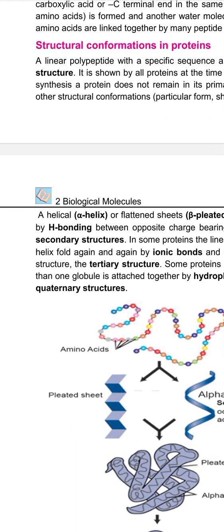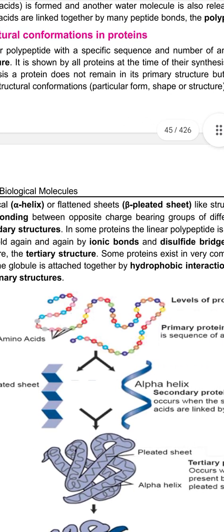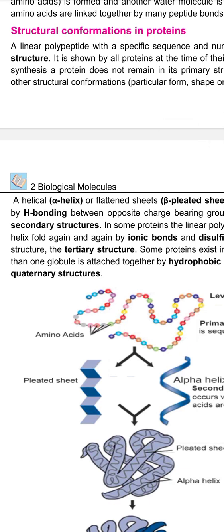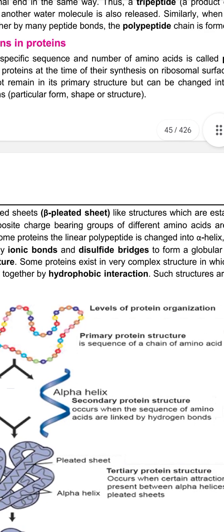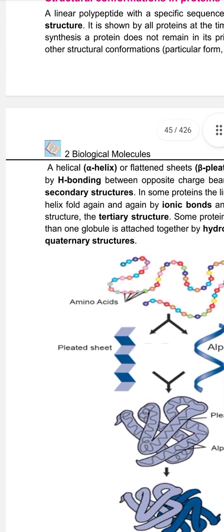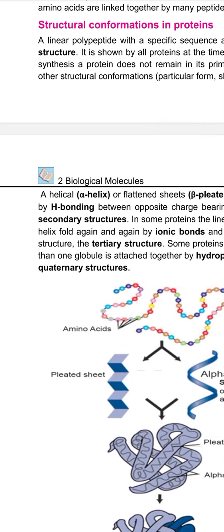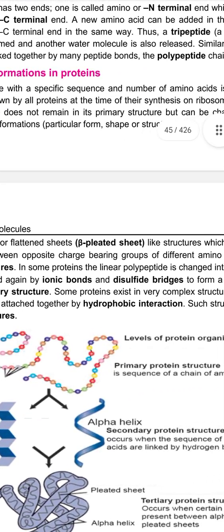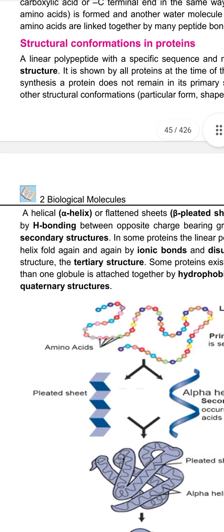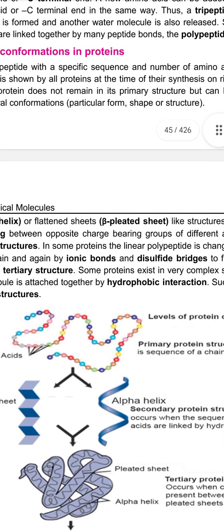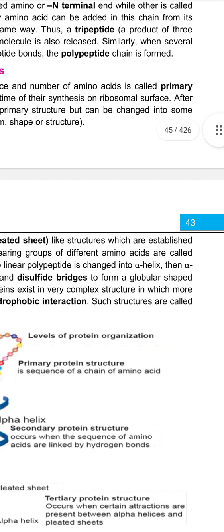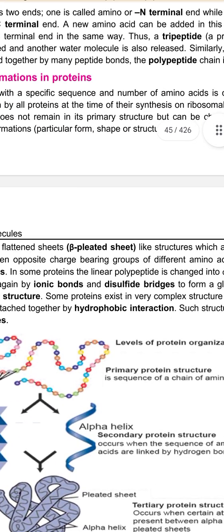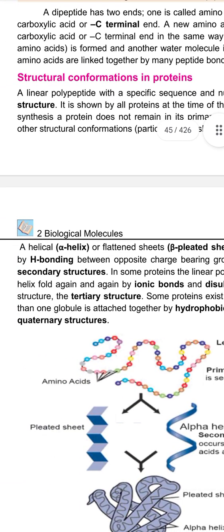Helical structures — alpha helices — or flattened sheets called beta-pleated sheet-like structures, which are established by hydrogen bonding between opposite charge-bearing groups of different parts of the polypeptide, are called secondary structures. In some proteins, the linear polypeptide changes into an alpha helix. The alpha helix then folds again and again via ionic bonds and disulfide bridges to form a globular shape structure called the tertiary structure.